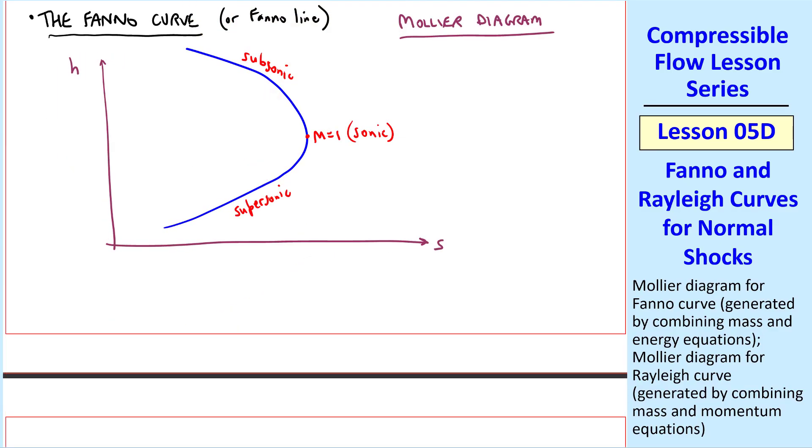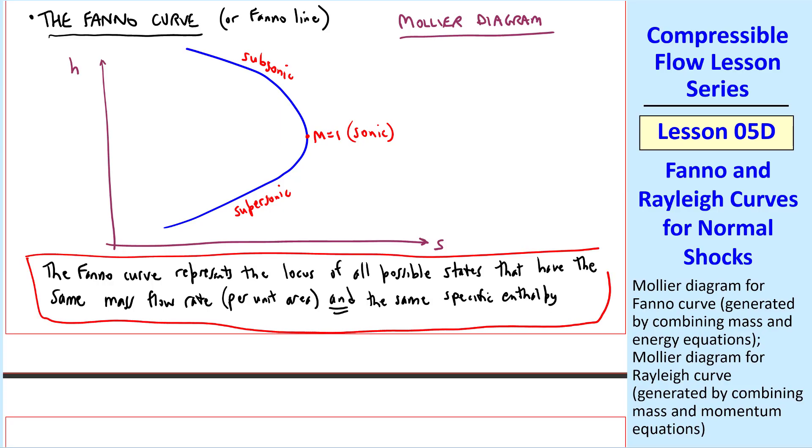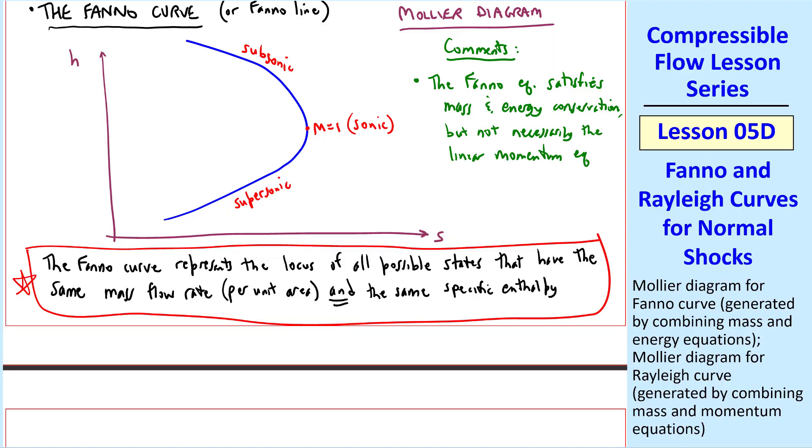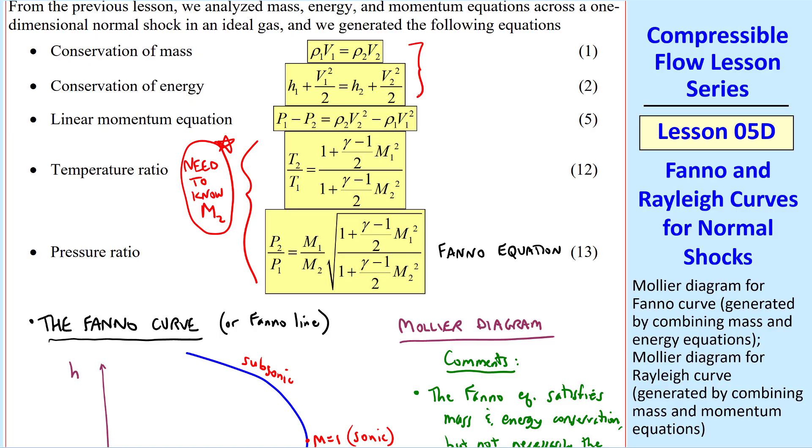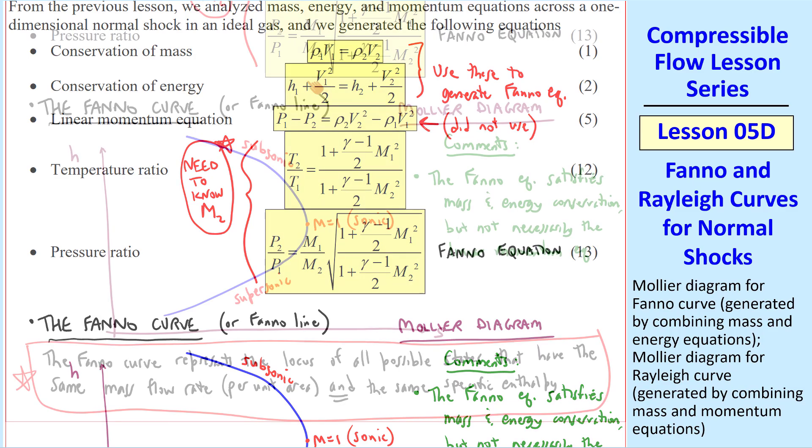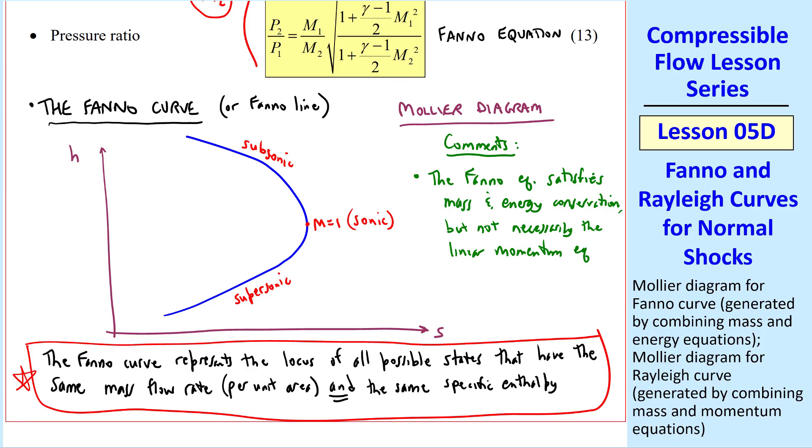It's derived from this Fanno equation, and I'll show you how to do that in a minute. But first I want to give a formal definition. The Fanno curve represents the locus of all possible states that have the same mass flow rate per unit area and the same specific enthalpy. This is the definition of the Fanno curve. I give some comments here. The Fanno equation satisfies mass and energy conservation, but not necessarily the linear momentum equation. We also see that the maximum entropy point on the Fanno curve occurs when the Mach number is 1, this sonic point.